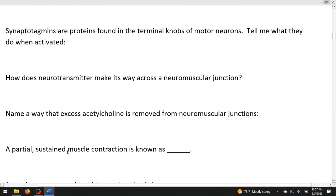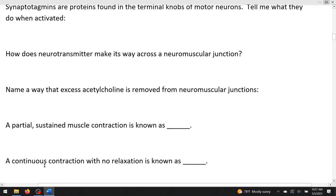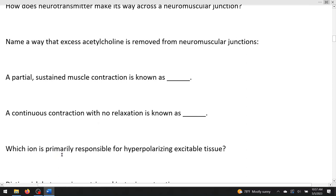A partial sustained muscle contraction is known as tone, muscle tone or tonus. A continuous contraction with no relaxation is known as a cramp in common speech but in A&P we call it tetany. Which ion is primarily responsible for hyperpolarizing excitable tissue? Watch my cursor. If you do the upstroke of the action potential, that's depolarization. If you do the downstroke that's called repolarization. If you do that undershoot and come back to normal that's called hyperpolarizing. And anywhere on the way down it's the same guy? K+, right? Potassium is the answer.